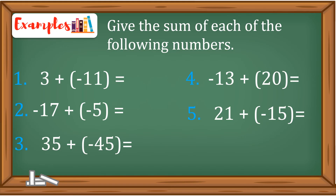Now let's take a look at the examples. Give the sum of each of the following numbers. Number one is 3 plus negative 11. If you notice, they have different signs, so you are going to subtract them and then copy the sign of the greater absolute number. Therefore, the answer is negative 8.